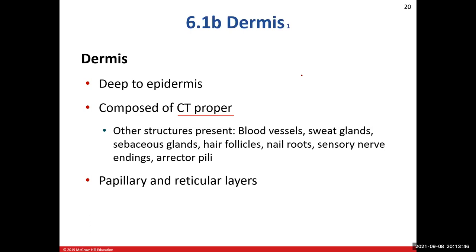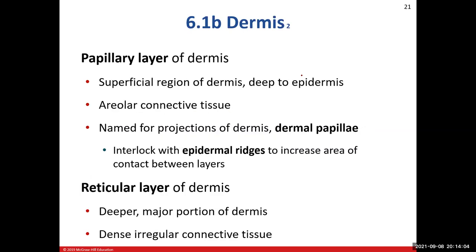The dermis is made up of two layers: the papillary layer, which is the thinner and more superficial layer, and the reticular layer, which is the deeper and larger of the two. The predominant tissue type in the papillary layer is loose connective tissue — areolar connective tissue. In the papillary layer we have bumps — projections that go upward — called the dermal papillae.